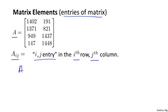For example, A11 refers to the entry in the first row and the first column. So A11 equals 1402. Another example, A12 refers to the entry in the first row and the second column. So A12 equals 191.